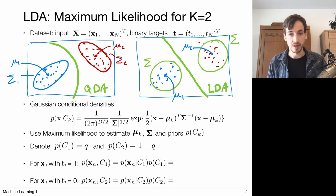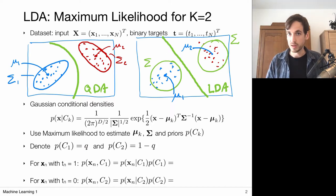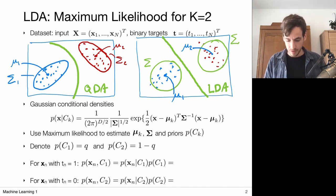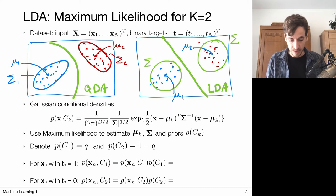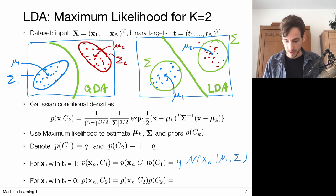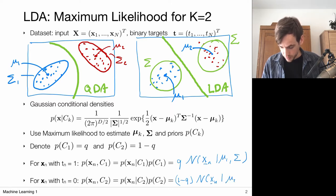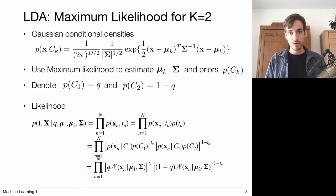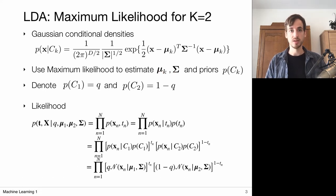We also need to recover the priors. We're going to model the priors with just a number: q represents the overall probability of observing a data point from class 1, and 1-q for the other class. Then we have a full probabilistic description: the joint probability for x_n from class 1 is q times the Gaussian with mu_1 and sigma, and for class 2 it is (1-q) times the Gaussian with mu_2 and sigma. We pick these parameters q, mu_1, mu_2, and sigma via the maximum likelihood principle.